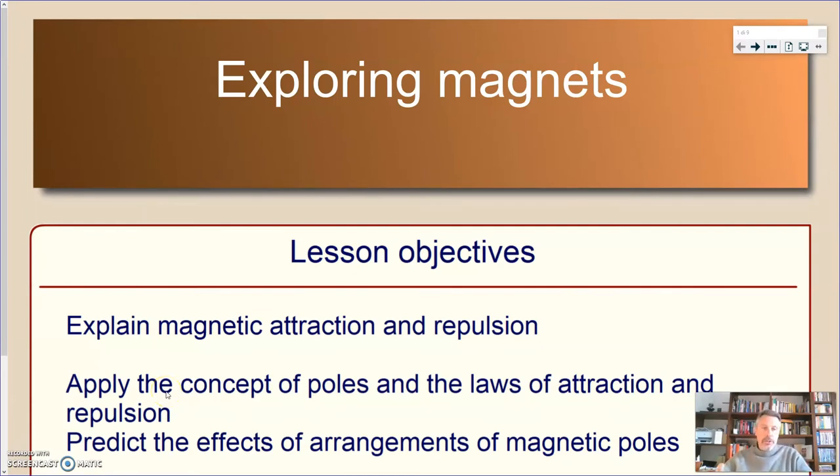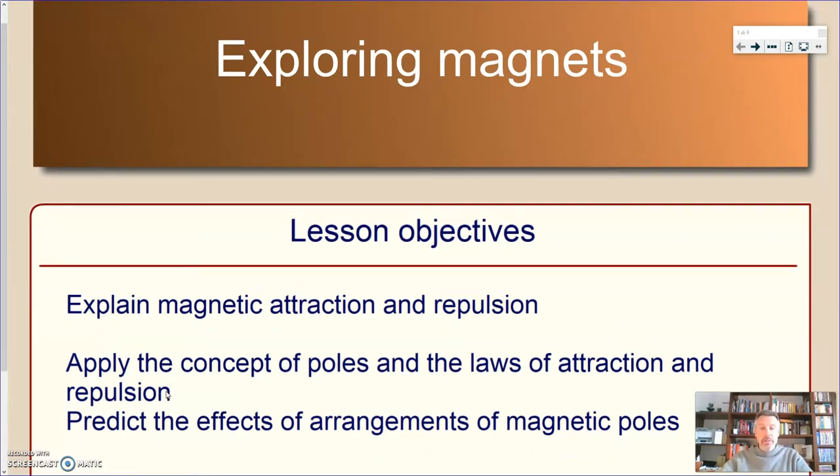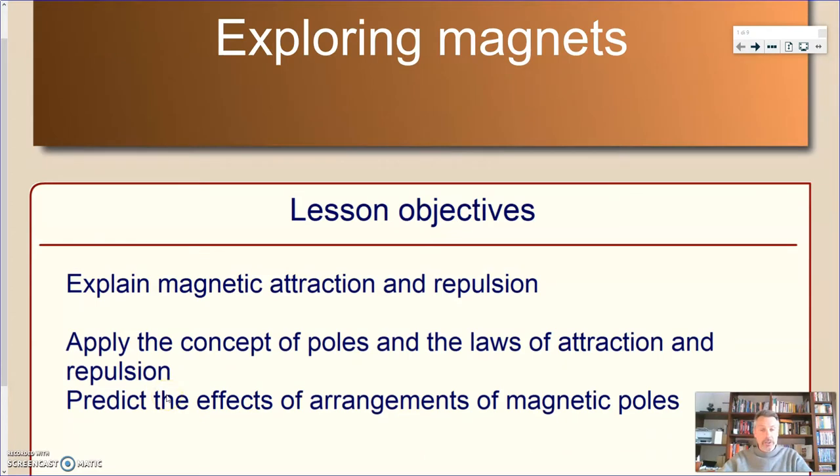At the end of this lesson we should be able to explain magnetic attraction and repulsion. We're going to see also the meaning of these two words. We're going to apply the concept of poles and the laws of attraction and repulsion. And finally, and this is a really important thing when you learn science, being able to make predictions based on your knowledge of the laws of physics, we should be able at this point to make a prediction of the effects of arrangement of magnetic poles.